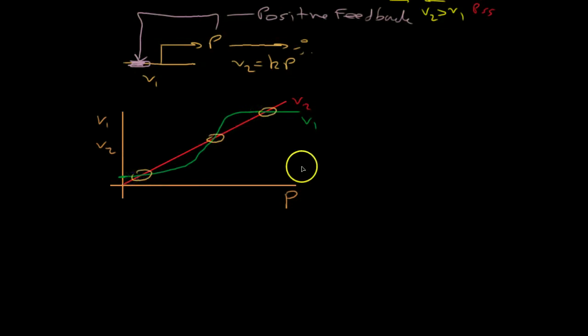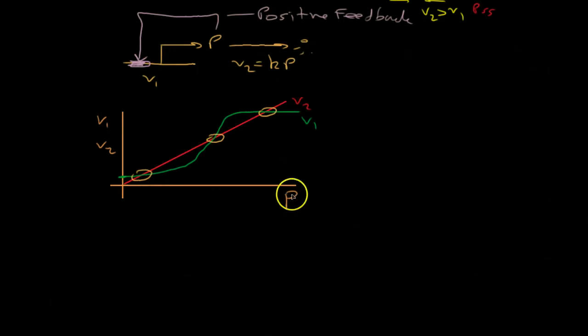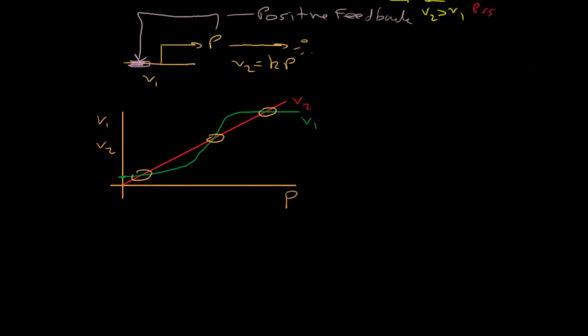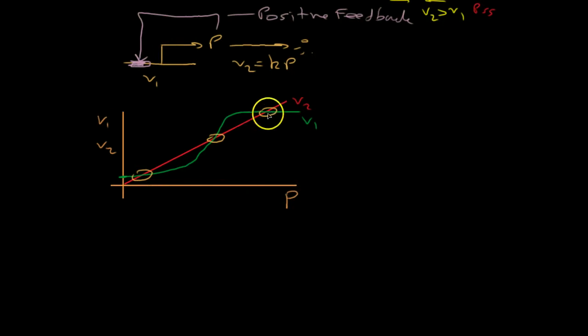And you can see probably immediately that there are actually three intersection points. These points mark when V1 equals V2. These are three steady state points. So, this system has three possible steady states at a given set of parameters. So, let's look at the stability of this high state.